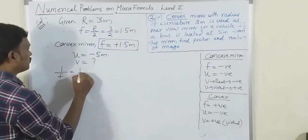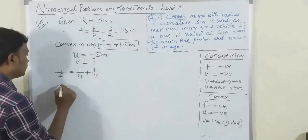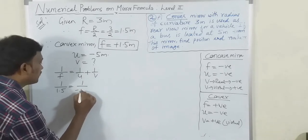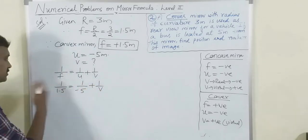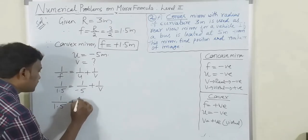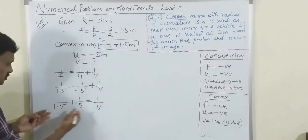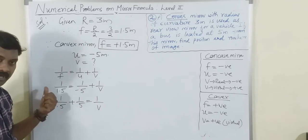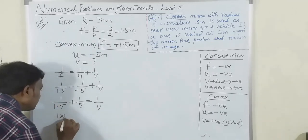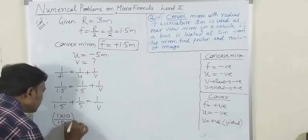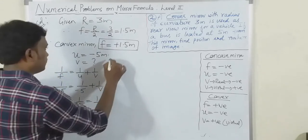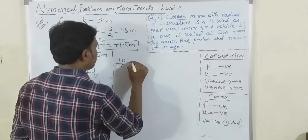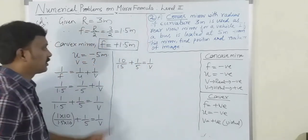Applying 1/f = 1/u + 1/v: 1/1.5 = 1/(-5) + 1/v. Bringing 1/(-5) to the left: 1/1.5 + 1/5 = 1/v. To remove the decimal, multiply by 10/10: 10/15 + 1/5 = 1/v. LCM of 15 and 5 is 15, so (10 + 3)/15 = 1/v, giving 13/15 = 1/v.